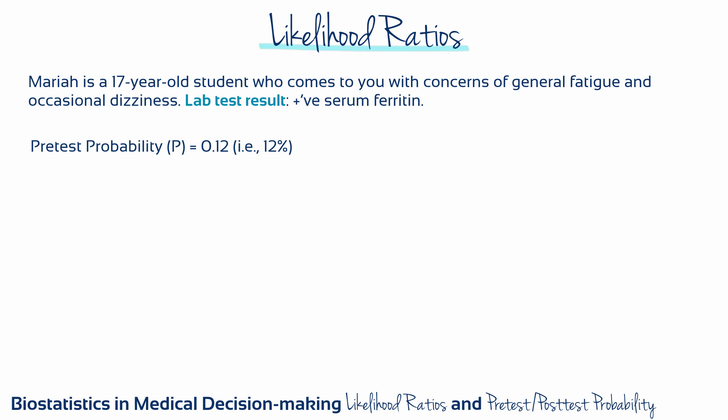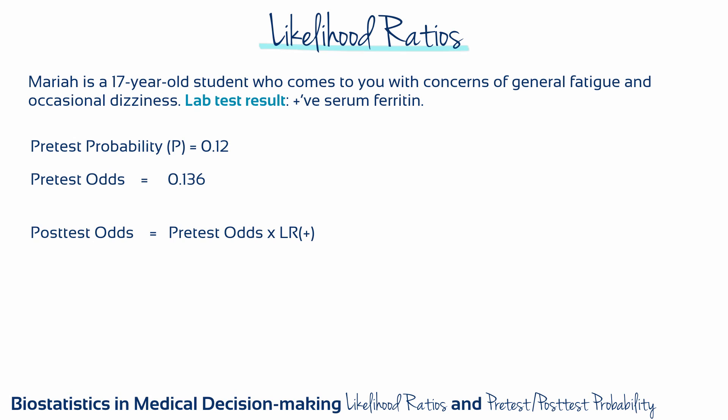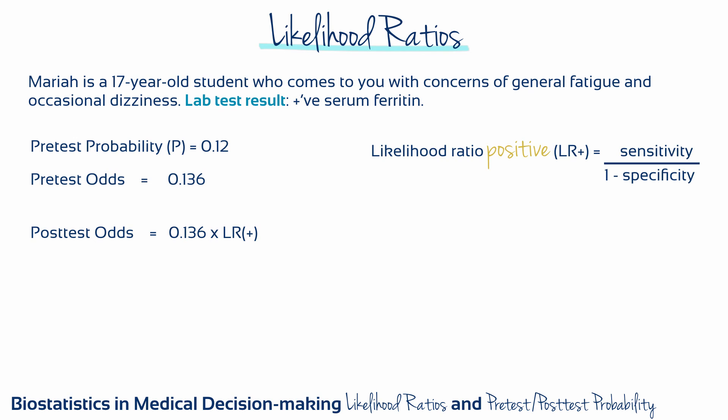Next we need to convert the pretest probability into pretest odds. Odds and probability are two alternatives for expressing precisely the same concept — that of chance. Every probability can be expressed as odds and every odds can be expressed as a probability. This gives us a pretest odds of 0.136. To determine the post-test odds of iron deficiency anemia, we need to multiply the pretest odds by the positive likelihood ratio for serum ferritin. We're using the positive likelihood ratio because Mariah's test result was positive.